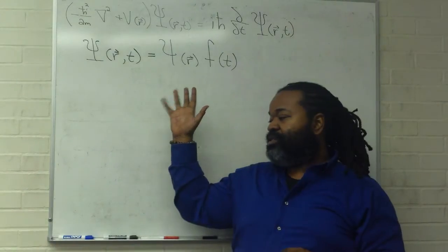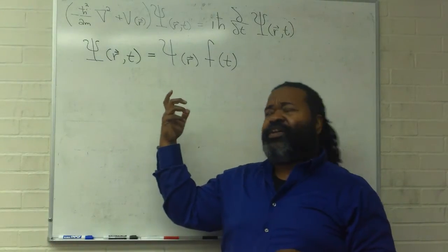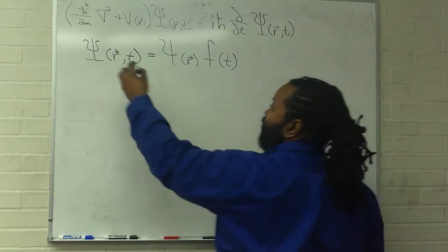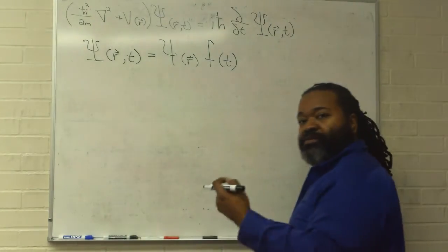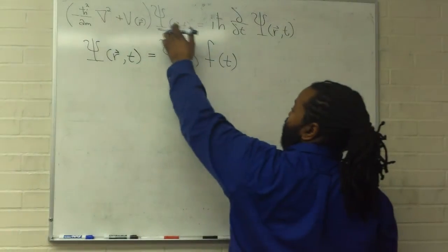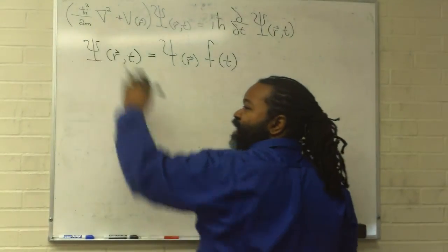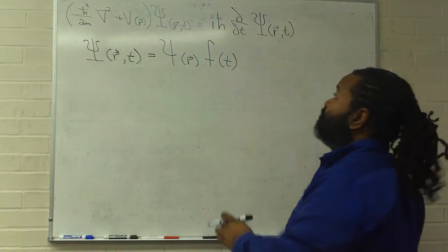That separability then allows us to simplify this time-dependent Schrödinger equation by replacing this quantity with the Hamiltonian operator and acknowledging that the time portion will not be impacted by these space derivatives.